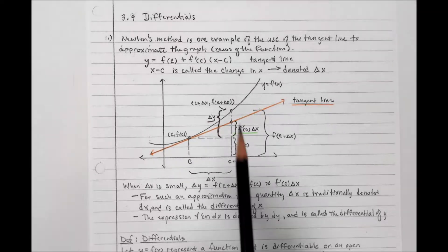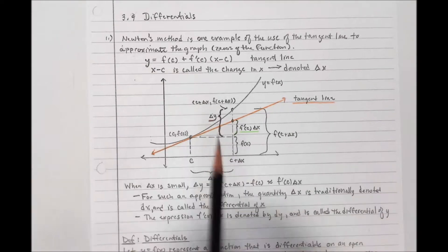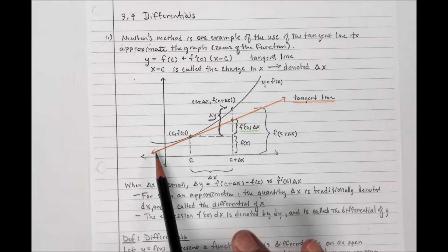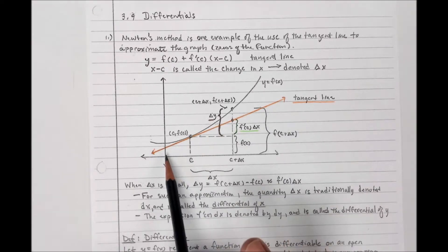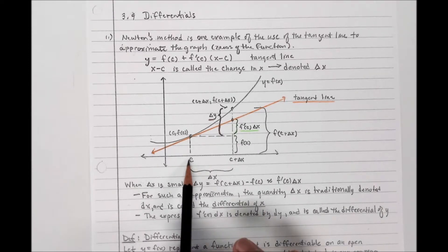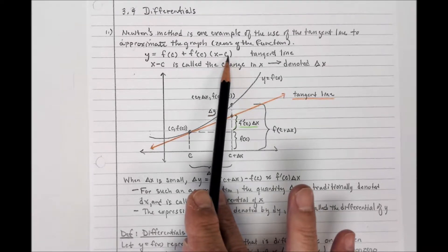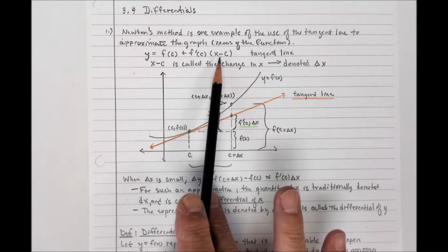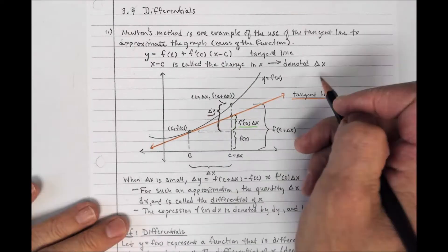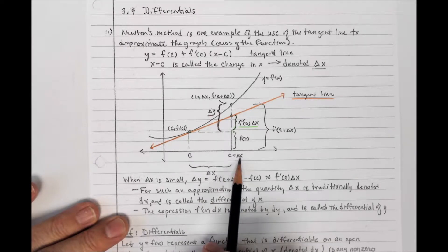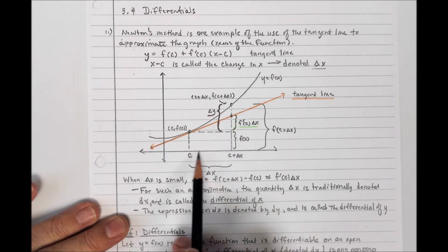If we look again at the tangent line — here's my diagram — the point of tangency is (C, F(C)). The tangent line is drawn here in orange. This part right here, X minus C, is the actual difference in the X values. We'd like to call this difference delta X, or the change in X, going from C to C plus delta X.